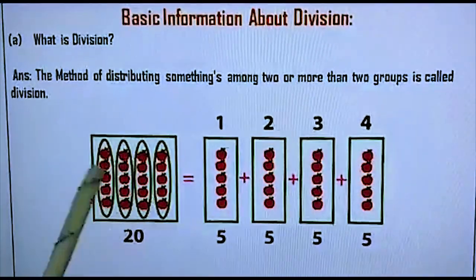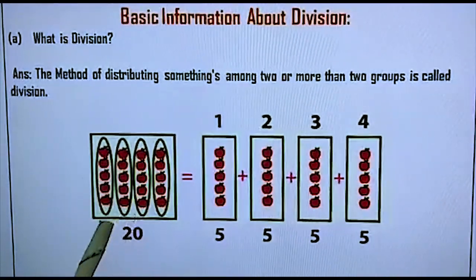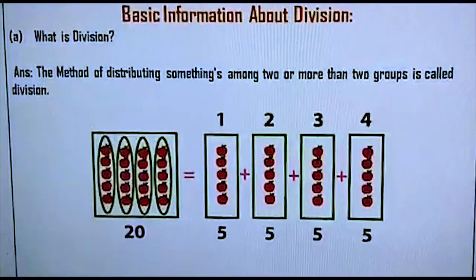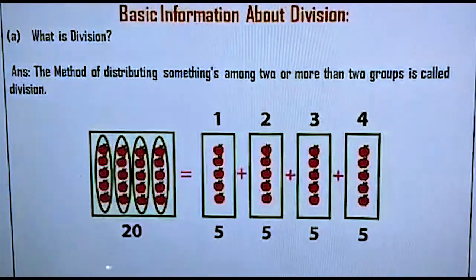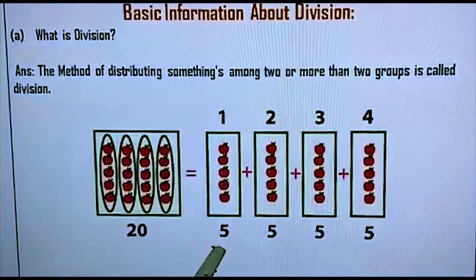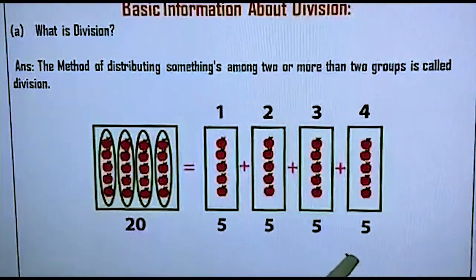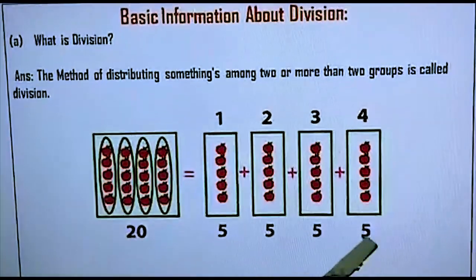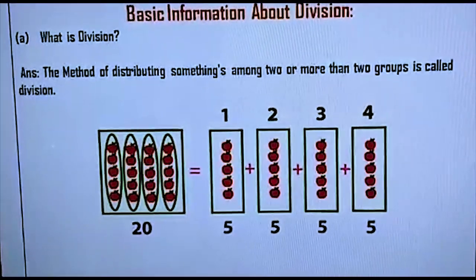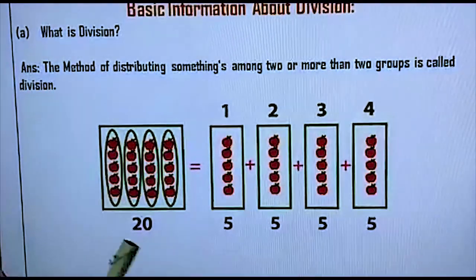So, I am going to divide these 20 apples among four groups. Then every group will get five apples equally. Is it clear to you? I hope so.